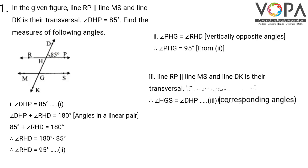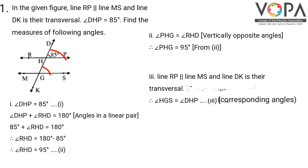Since line RP is parallel to line MS and line DK is their transversal, angle HGS is equal to angle DHP as they are corresponding angles. Therefore, angle HGS is equal to 85 degrees.